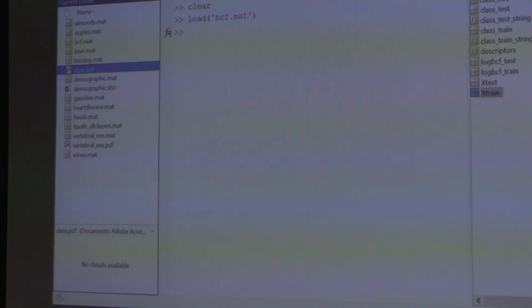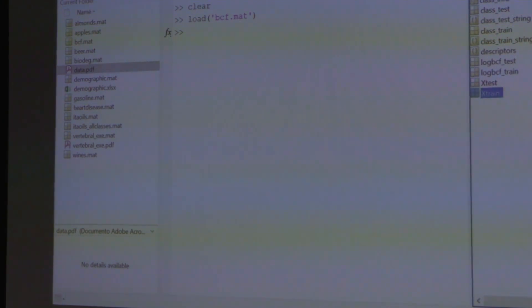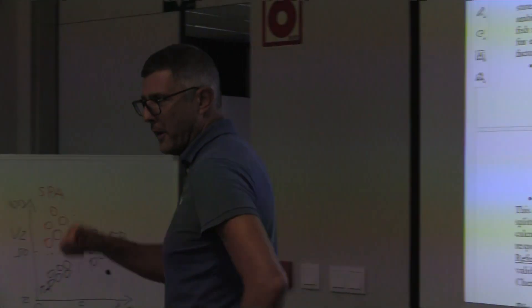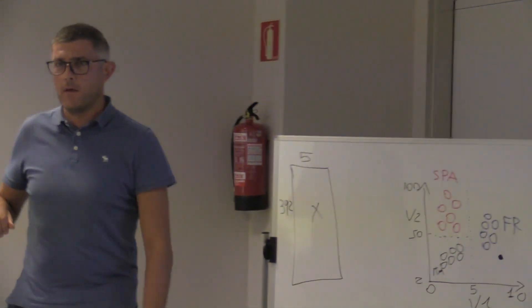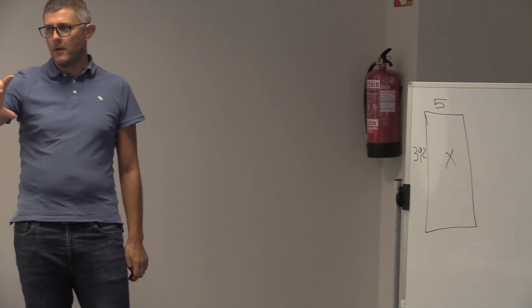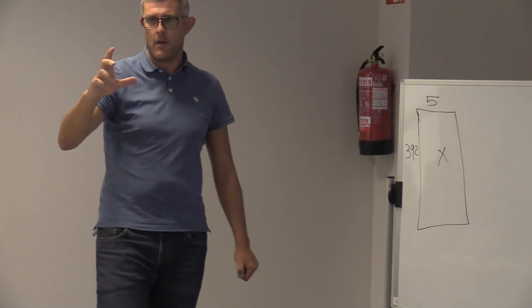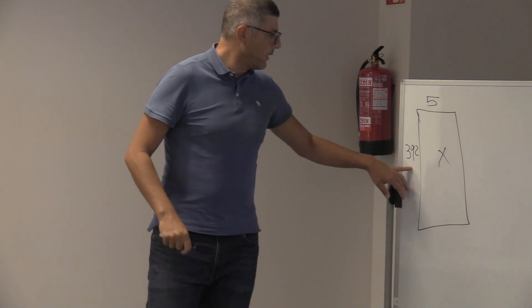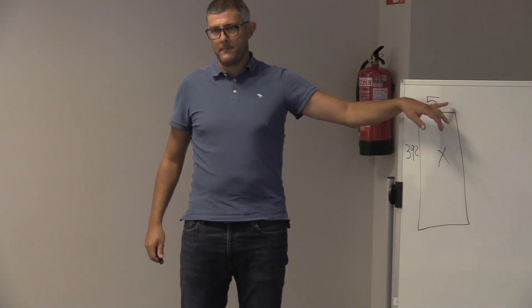This is a more typical dataset, very different from what we were trying earlier today, where we had around 50 samples and 3,000 variables. Here it is the opposite — we have a good number of samples and few variables.